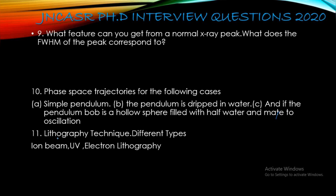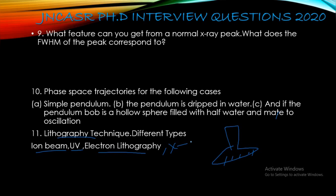The next question was about lithography techniques — the student had done their project on ion beam lithography. Lithography is essentially creating a pattern on nano material, similar to a rubber stamp but with textures at the 20–100 nanometer scale. Different types include ion beam lithography, UV lithography, electron beam lithography, and X-ray lithography, though X-ray lithography is still not in practical use. A dedicated video on lithography will be uploaded and linked in the description.